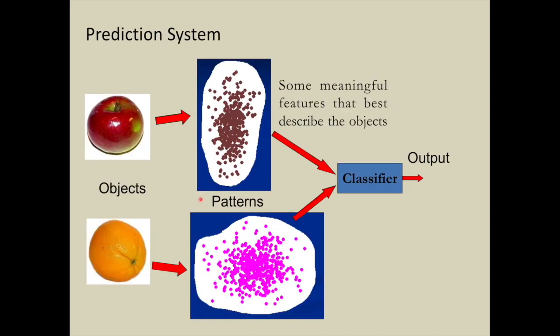So how does supervised learning work? A given object or objects are extracted into some meaningful features, such as for fruits, shape, weight, or color could be features to distinguish between an apple and an orange. These features or patterns are then processed to a classifier. The classifier will give the output as target label, also known as class label. In this particular case, the output will be either apple or orange.